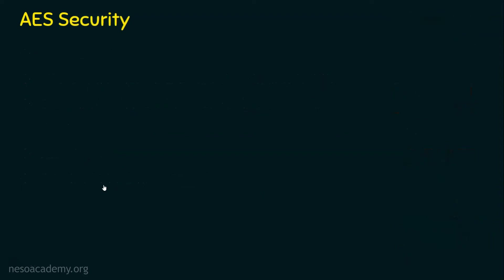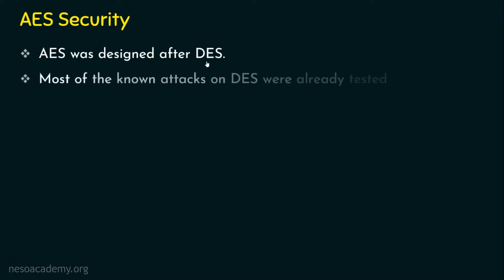Let's now move on to the security of AES. AES was designed after DES, so most of the well-known attacks on DES were already tested on AES before it was standardized. That's why AES is widely used. When comparing AES with DES, there are a lot of differences, and one major difference is the key size — DES uses a 64-bit key.